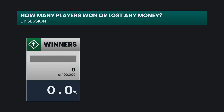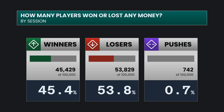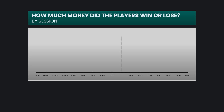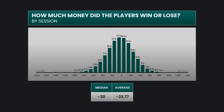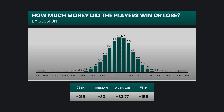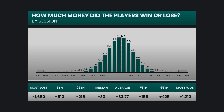Now let's look at the same data for an entire session of 10 shooters. Just over 45% of the sessions ended winning money while 53.8% lost money, and under 1% pushed. The median was a loss of $30 while the average was a loss of $33.77. The middle 50% ranged between a loss of $215 to a win of $155, and the middle 90% ranged between a loss of $510 to a win of $425. The most lost during a session was $1,650 and the most won was $1,210.